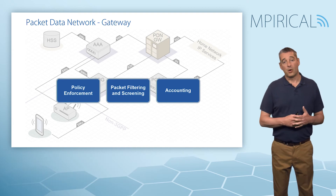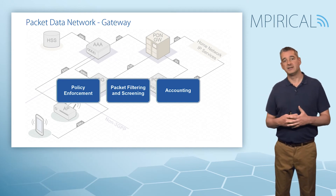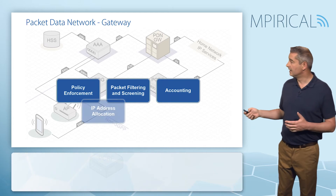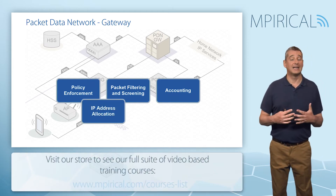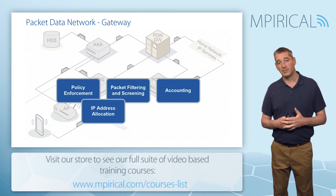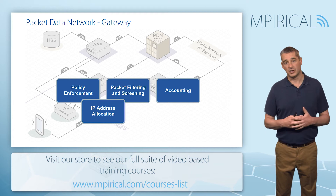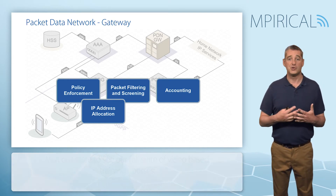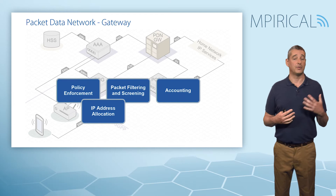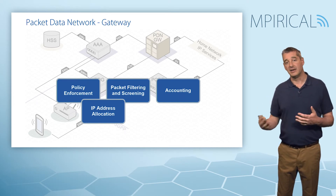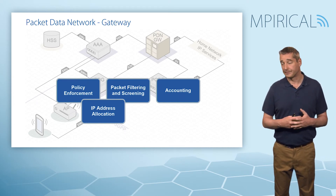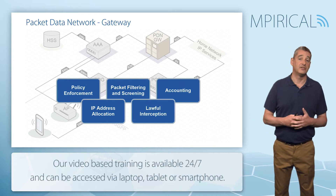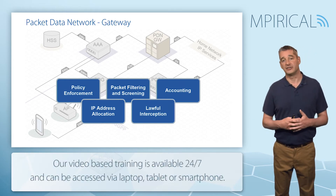The PDN gateway will also be involved in counting, generating records which can be passed to billing systems. In addition, it is responsible for the allocation of the IP address which the mobile will actually use — an IP address used across both the LTE network and our Wi-Fi network. And finally, it also supports lawful interception.